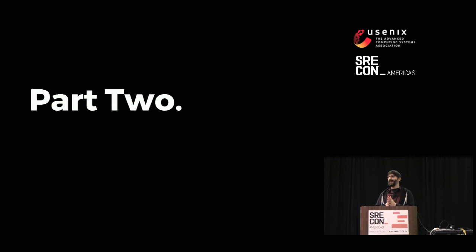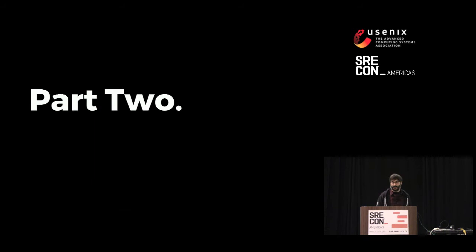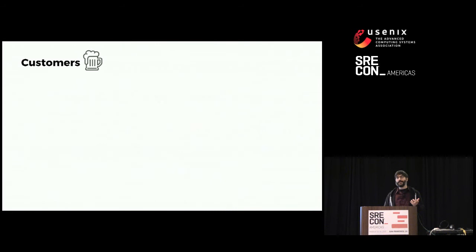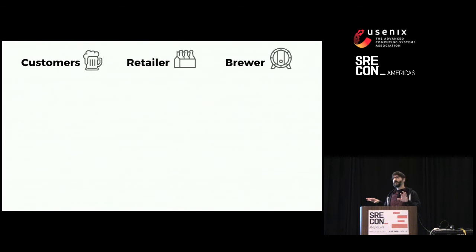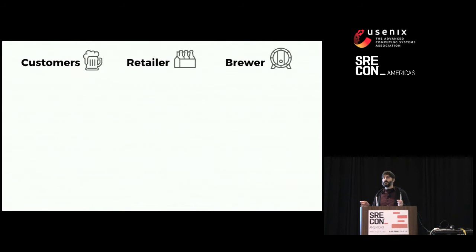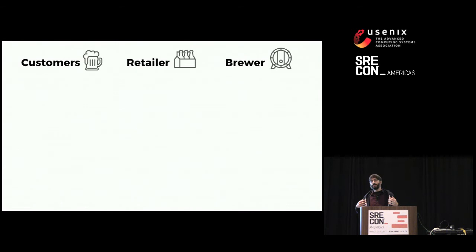Does anybody have any beer on them? Nobody's pre-gaming? We'll just use our imaginations. In the beer game there are three players: customers who like to drink beer, retailers who sell it, and brewers who make beer. Systems thinking is taught in MBA programs and they'll actually play this game. The class is divided into three teams, physically separated, and they can only communicate by passing slips of paper back and forth indicating desired intent to buy, product exchanged, or money exchanged. The point of the game is for the three teams to optimize for customer satisfaction, retailer, and brewer profit.